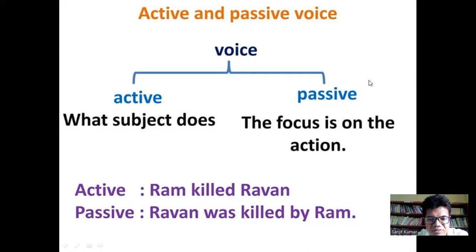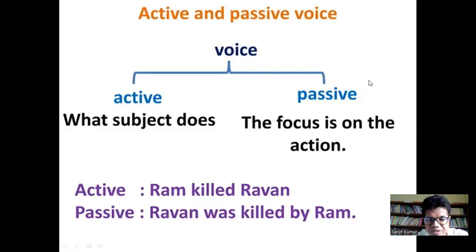For example, in active form: 'Ram killed Raven' — the subject Ram did the action. The passive form of this sentence is 'Raven was killed by Ram.' Here we can see that the killing part, meaning the action, is more emphasized. That is the difference between active and passive sentences.